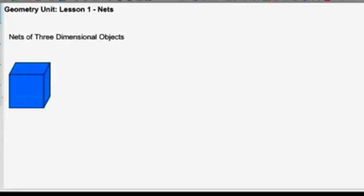First thing we need to do is talk about three-dimensional objects. A net is a plane figure that can be folded up to form a solid.